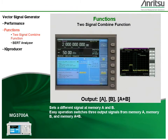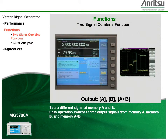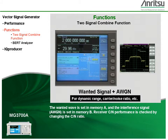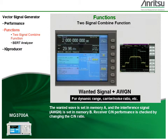A different signal is set in memory A and B. Easy operation switches three output signals from memory A, memory B, and memory A and B combined. The desired wave is set in memory A, and the interference signal AWGN is set in memory B. Receiver carrier-to-noise performance is checked by changing the carrier-to-noise ratio.